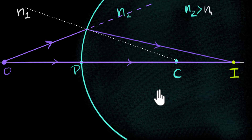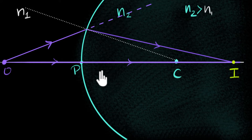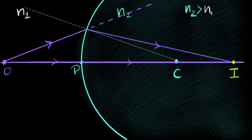So we are assuming that n2 is larger than n1 — large enough for this ray to bend enough to meet at this point, giving us a real image. The big question is: if we know the object distance, can we figure out the image distance? We start with the only thing we know about refraction: Snell's law. Snell's law connects the angle of incidence to the angle of refraction.